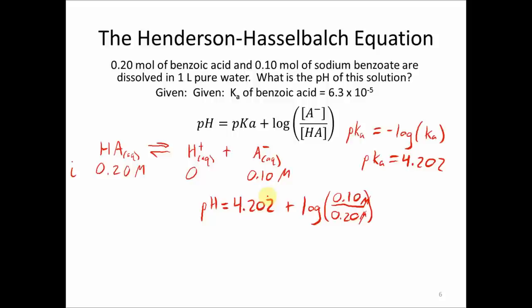And what this brings us to is pH is equal to 4.202 plus negative 0.301. And this will give us a final answer of pH is equal to 3.901, which rounds to 3.9. And that is it. That is how simple the Henderson-Hasselbalch equation makes it to calculate the pH of a buffer solution.